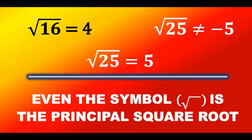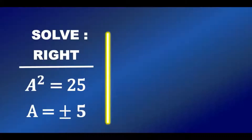You saw it right — the principal square root of 16 is 4, and the principal square root of 25 is 5. All are correct here.